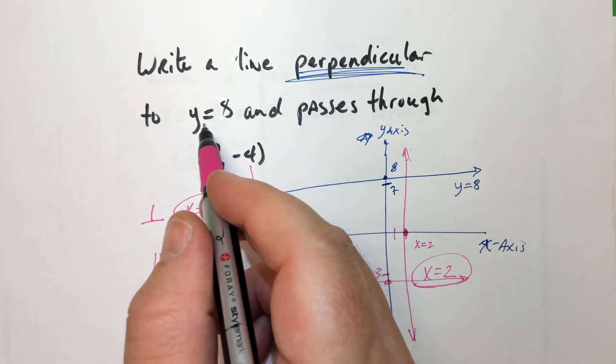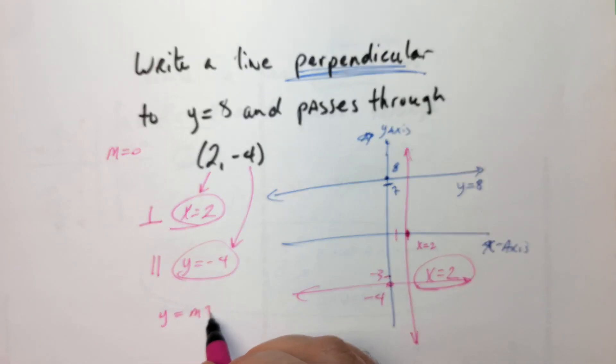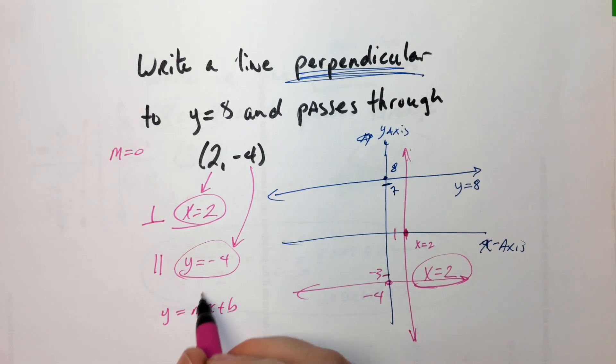And these, Y equals a number, has a slope that's 0. Because, like, you know, it's Y equals MX plus B, right? Well, if that's 0, 0 times X is just 0. And you don't really need to write plus 0. So it's just Y equals B.